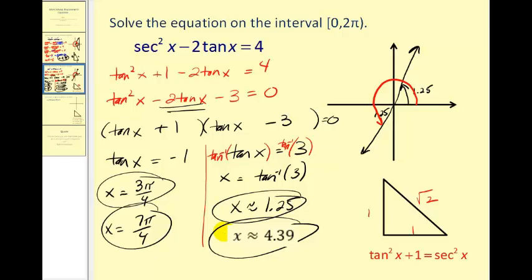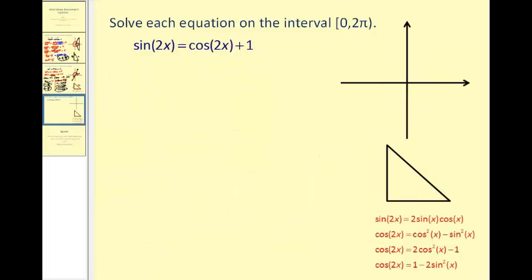I think we have time for one more. Okay on this last problem we have two different trig functions both with double angles. So what we'll try to do is use these double angle identities and perform some substitutions to make this easier to solve.